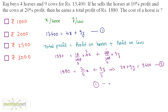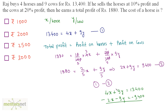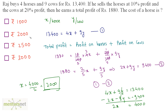Subtracting equation 2 from equation 1: 9Y cancels out, and 4X − 2X = 2X = 4,000. Therefore X = 4,000 / 2 = 2,000. The cost of each horse is Rs. 2,000.